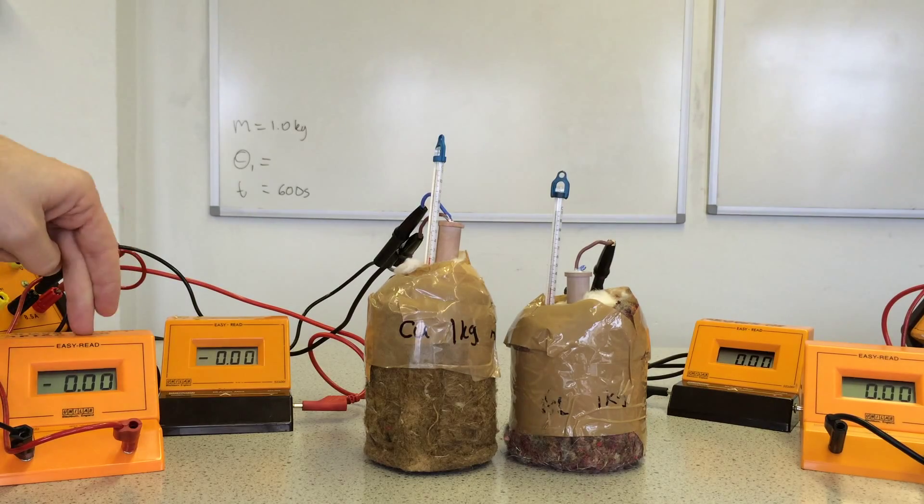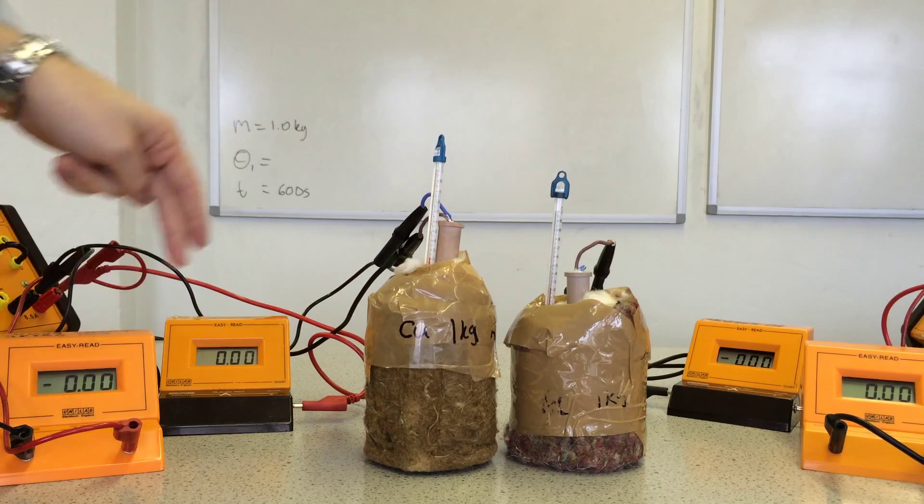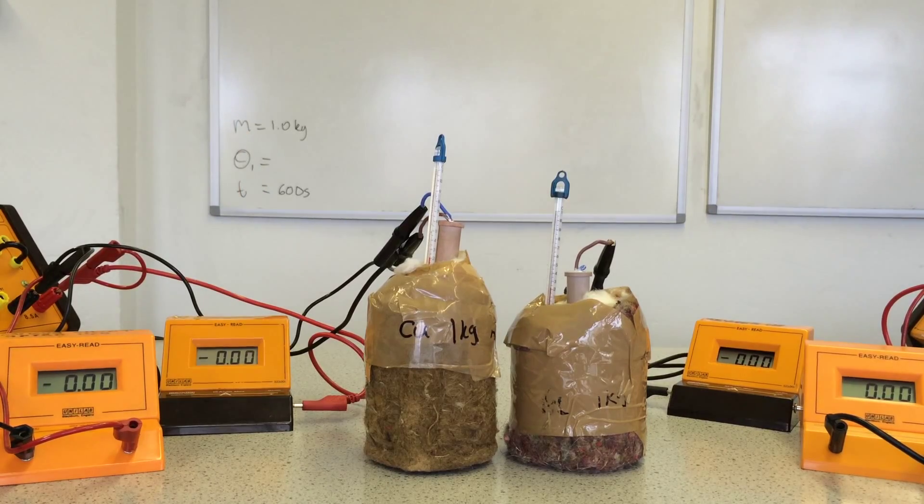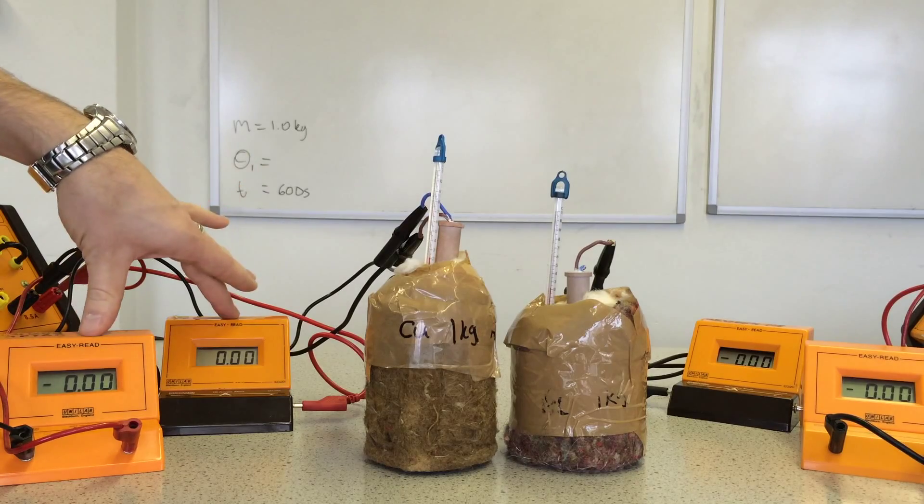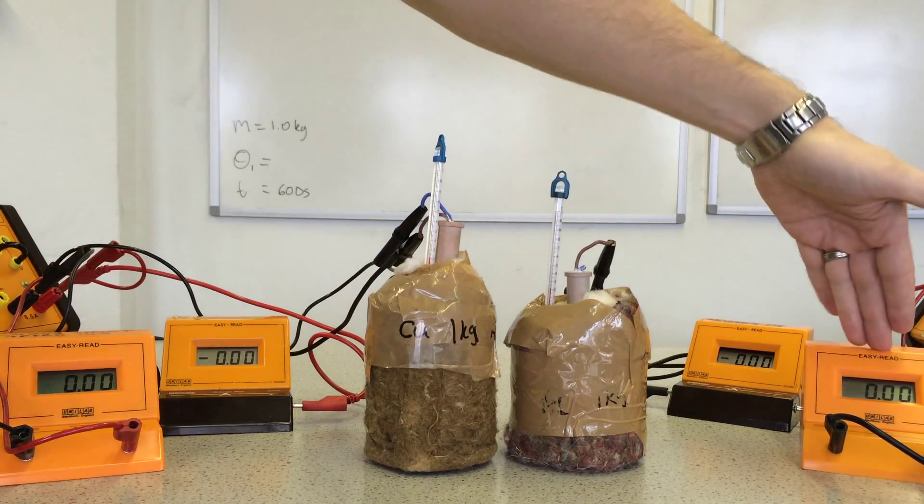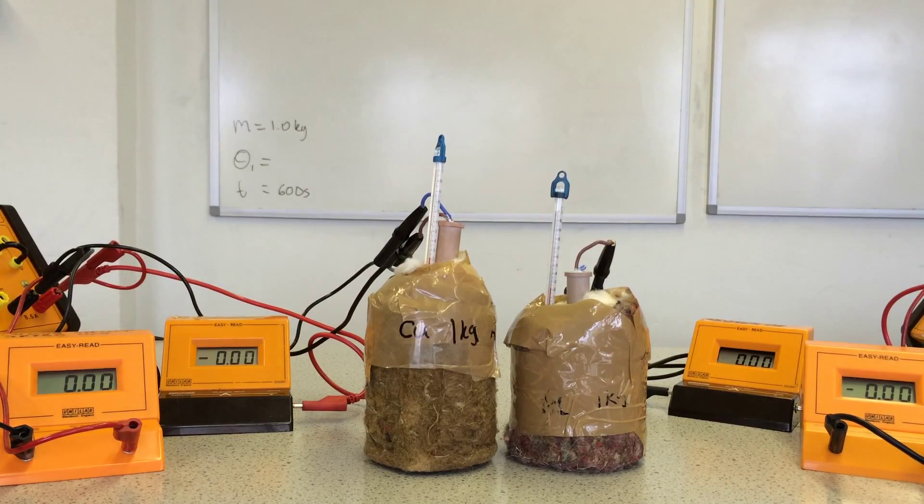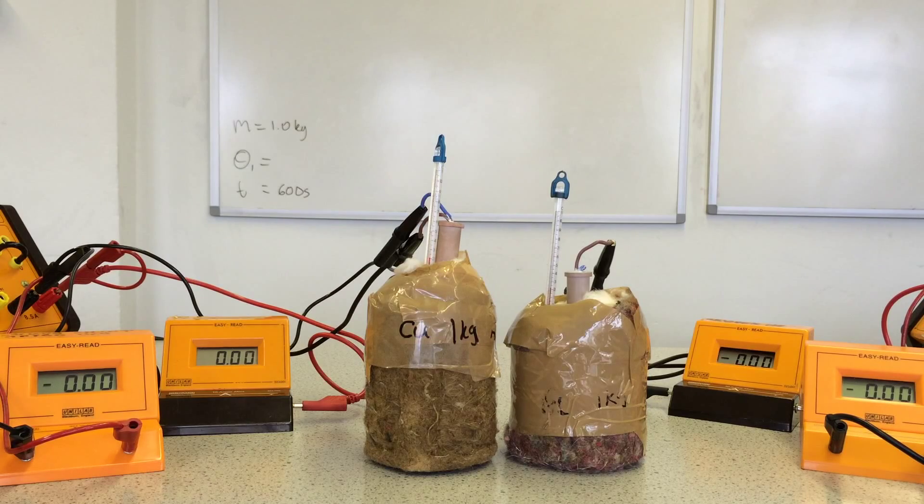There is a voltmeter across the power supply and an ammeter so I can determine the voltage across and the current through the heaters. This is for the copper block here and that is the voltmeter and ammeter for the aluminum block. They also have a thermometer inside so I can measure the starting temperature and the final temperature.